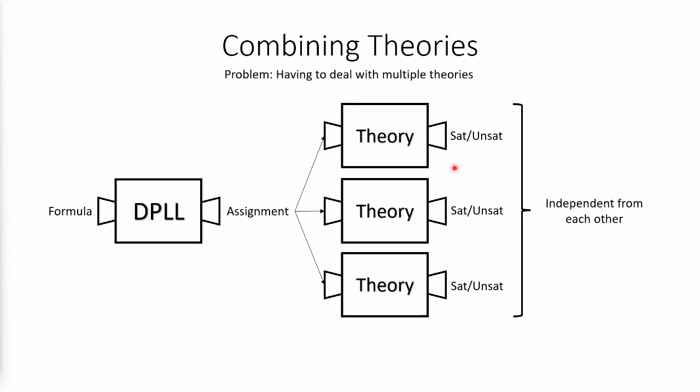Because different solvers might have shared variables, and we want to make sure that they all agree on them. So for that we have Nelson-Oppen.